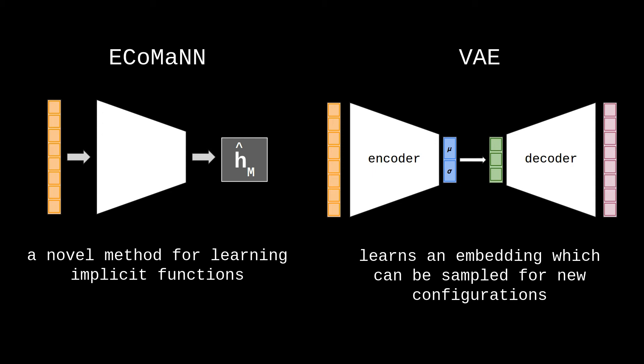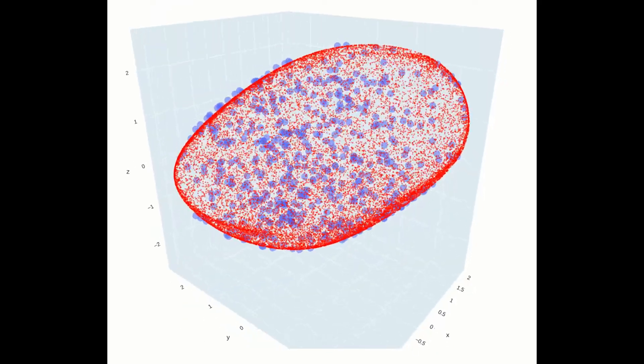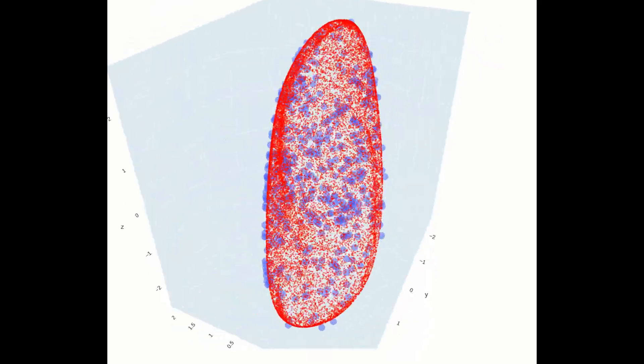Using ECOMAN, randomly sampled points are successfully projected onto the ground-truth manifold with a high success rate, and performance exceeds that of the VAE.